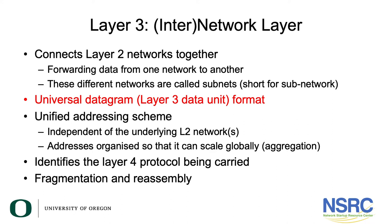Another problem with layer 2 networks was having enormous numbers of MAC addresses. If you build the internet with 100 million or 500 million devices connected, there are 500 million MAC addresses, and we couldn't build a table big enough to hold all of those. But what we can do is allocate a range of IP addresses to each network, and then have a single entry in a table that says this entire range of IP addresses is reached through this particular network. That allows us to scale to something we can build on a global scale.